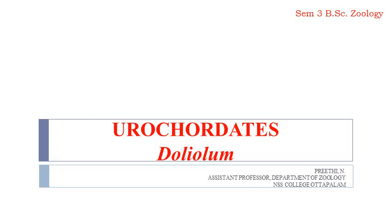Good morning all. We have come to the last part of module 2. It is the examples on the Urochordata. We have completed the Urochordata characteristic features. We have gone through the morphological as well as anatomical features of the type species in the Urochordata, Ascidia. And we have also seen the classification of Urochordata.